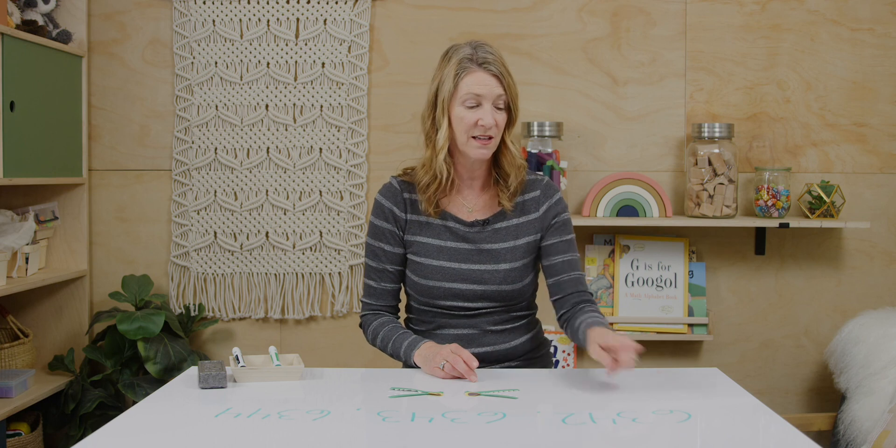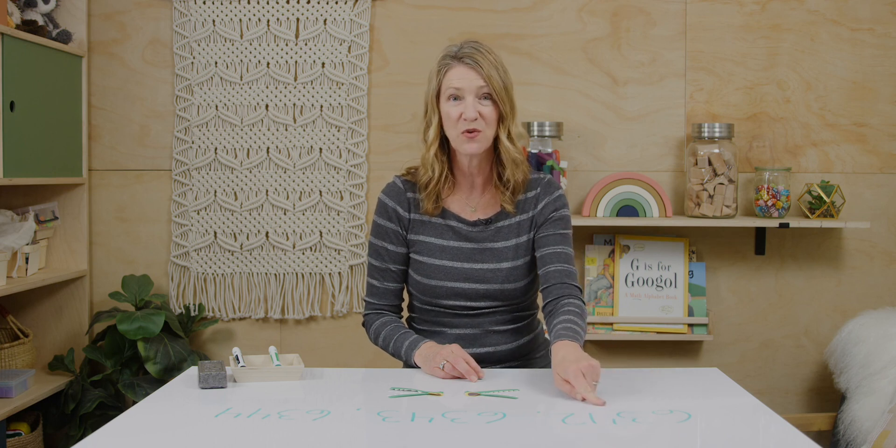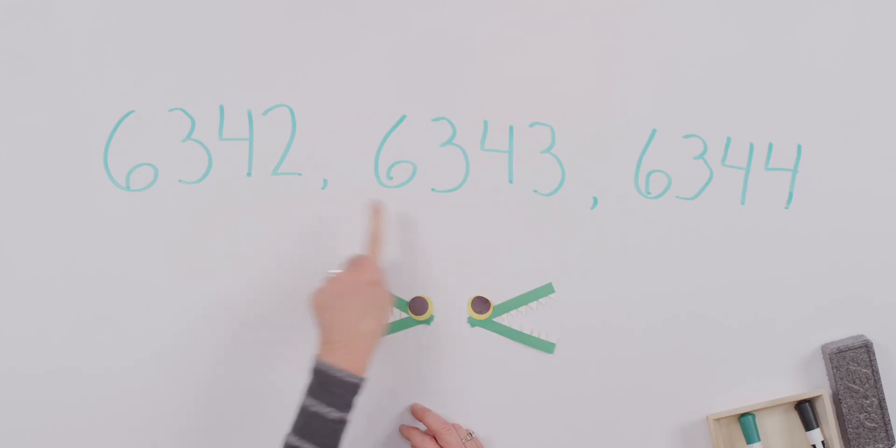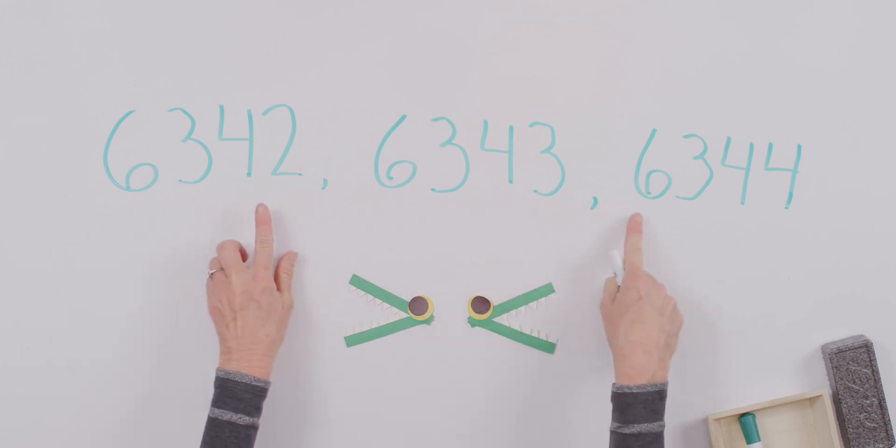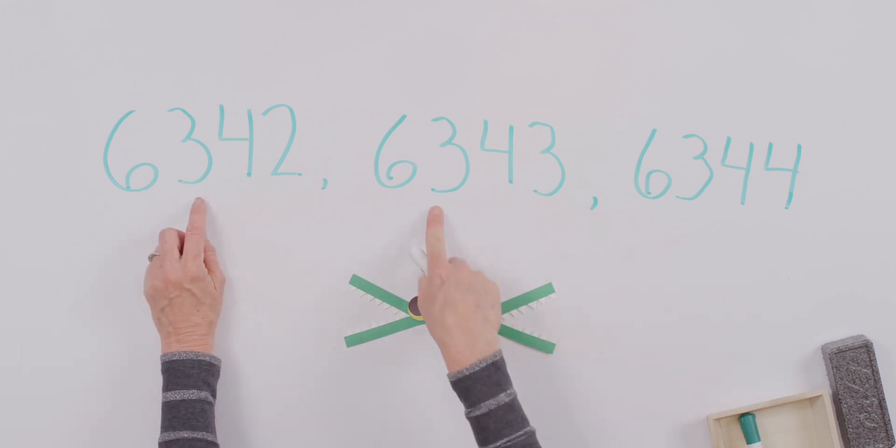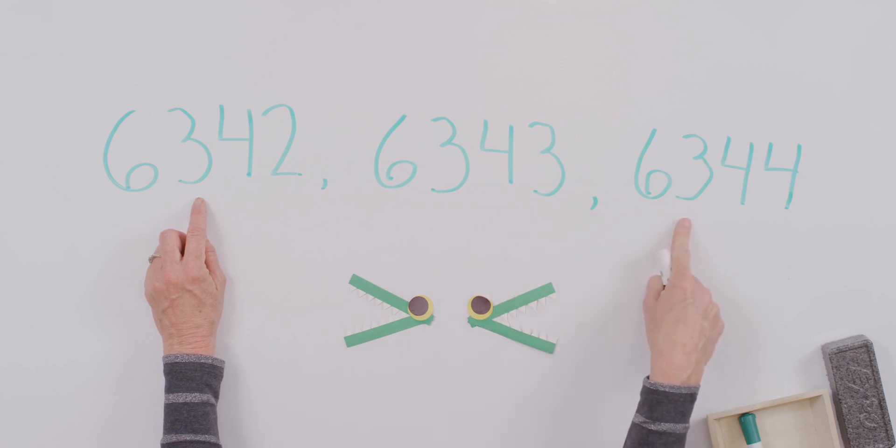Alrighty, let's take a look at these numbers and figure out which one is greatest. 6,342, 6,343, or 6,344. Which is the greatest and how can we prove it? Well, if we look in the thousands column, the numbers are the same. If we look in the hundreds column, the numbers are the same.